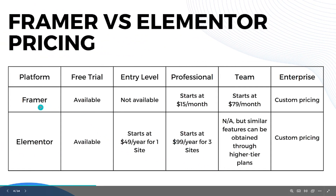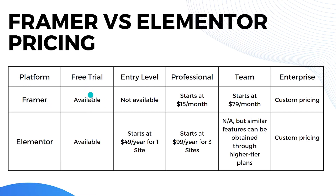Now let's go to the pricing. When it comes to free trial, both Framer and Elementor have one available. When it comes to entry level, Framer doesn't have it while Elementor has it, starting at $49 a year for one site. When it comes to the professional subscription, Framer starts at $15 per month or around $180 a year, while Elementor starts at $100 a year for three sites.